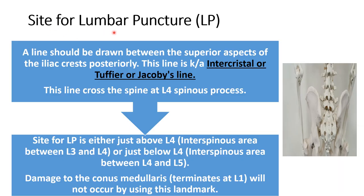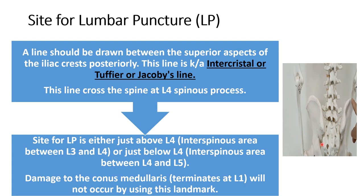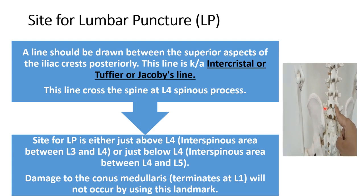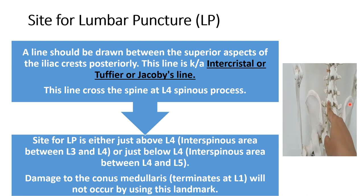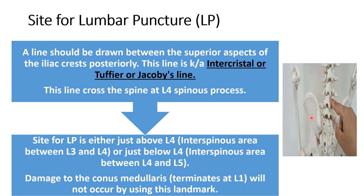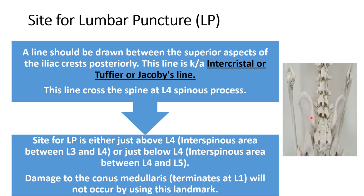For the site of lumbar puncture, we draw a line posteriorly between the superior aspect of the iliac crests. In this video you can see I am drawing the line between the superior aspect of the iliac crests posteriorly, and this line crosses at the level of L4. Above and below L4 we can insert the lumbar puncture needle — either the L3-L4 interspinous space or the L4-L5 interspinous space.